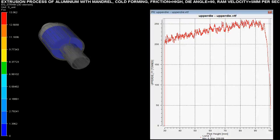Ram velocity is set at 5 mm per second. Die angle is specified as 90 degrees, and there is high friction during this cold extrusion process.